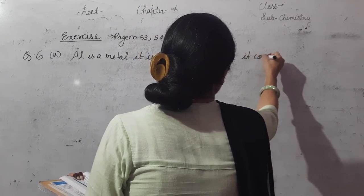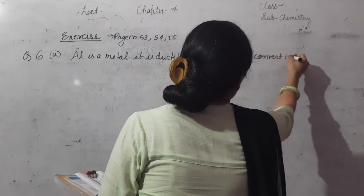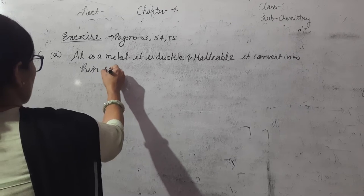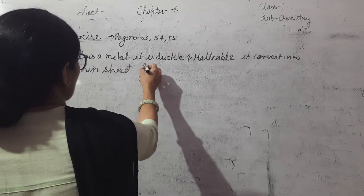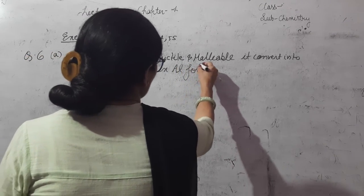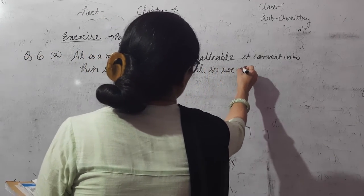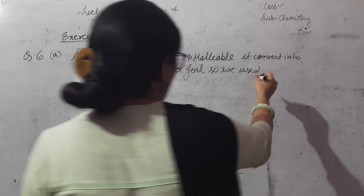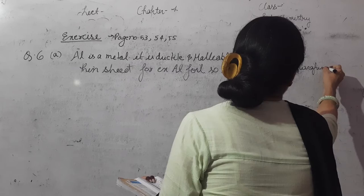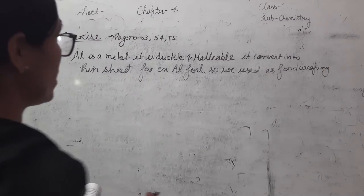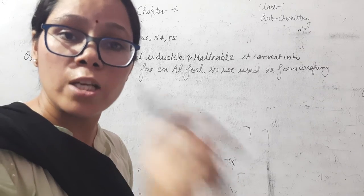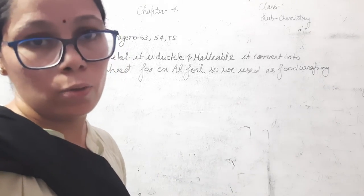It converts into thin sheet, for example aluminum foil. So we use it as a food wrapping material. Aluminum is malleable, it can convert into thin sheet, so aluminum is used as a foil.